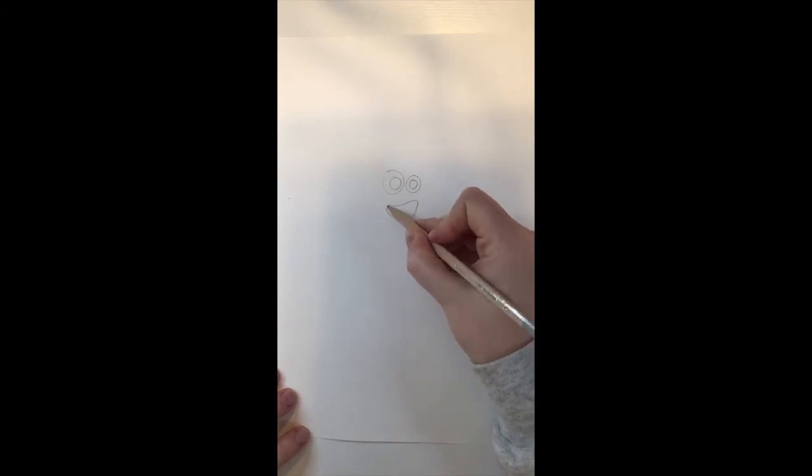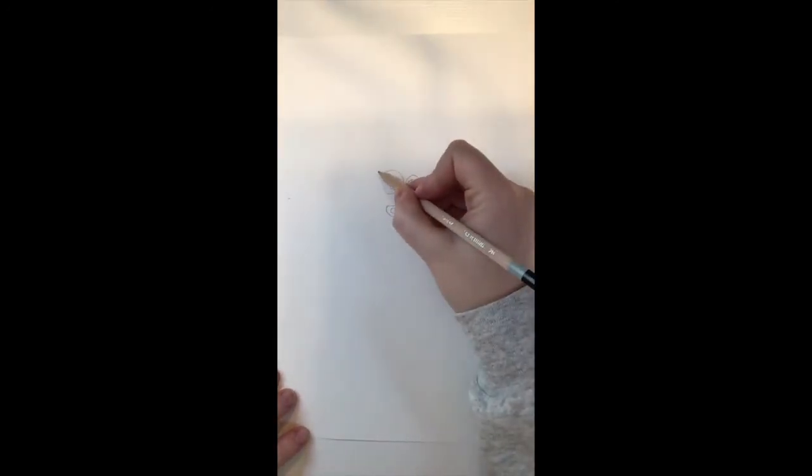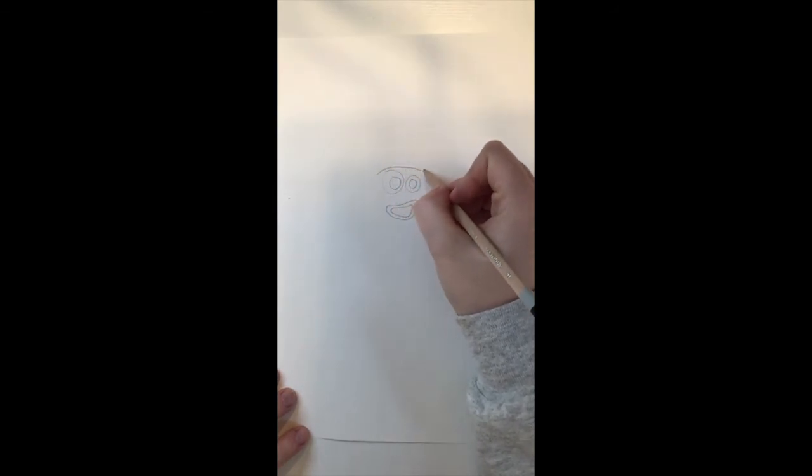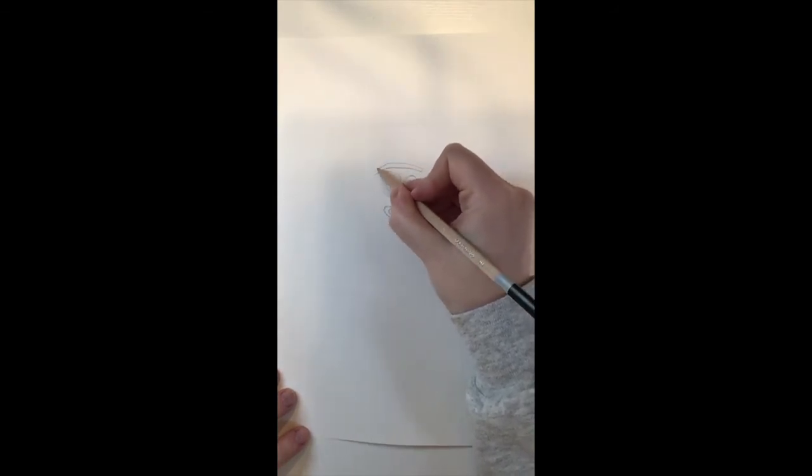Alright, go ahead and make his mouth. You can make any shape you want. You're just going to repeat that same shape on the inside. You're going to make his eyebrows. You're going to go up, over, bring it around, close it up.